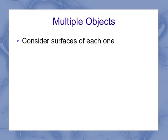If I have multiple objects, I need to consider the surfaces for each one of those objects. So here, I've got two boxes sitting on top of each other, sitting on the floor.